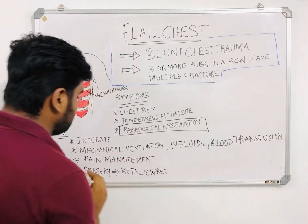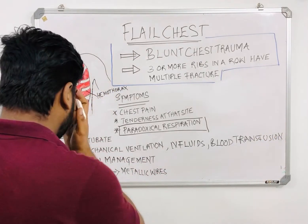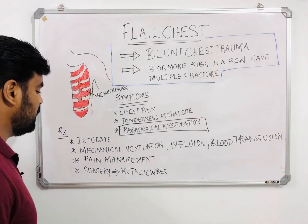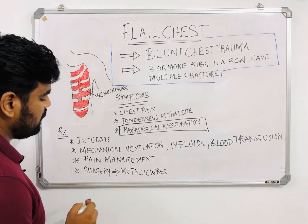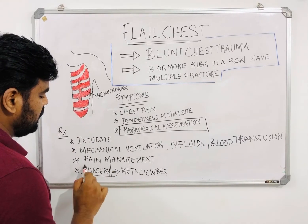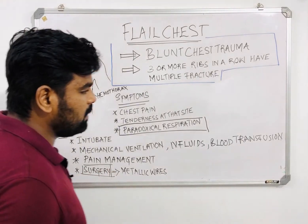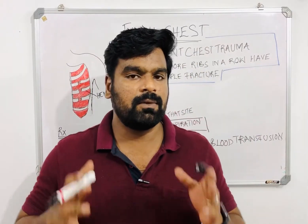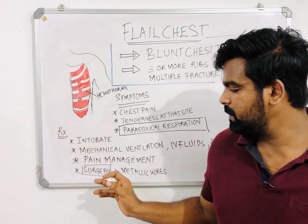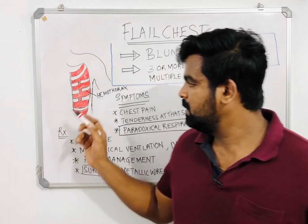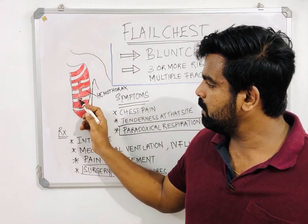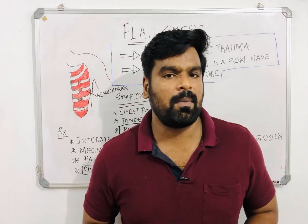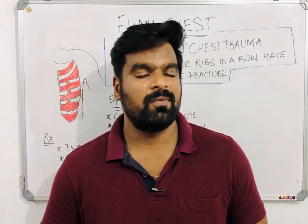Pain management is also very important because with severe rib fractures, the patient may have severe pain on that side. The only surgical option in rib fracture with flail chest is fitting metallic wires. In severe flail chest, metallic wires are used to help fix the broken ribs. That is the only surgical option, and that is all about flail chest.